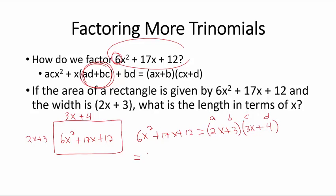So A times C is 2 times 3x squared plus x times A times D, 2 times 4, which is 8, plus B times C, which is 3 plus 3, 9, and 8 is 17, plus B times D.